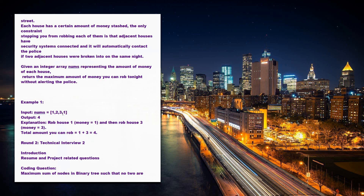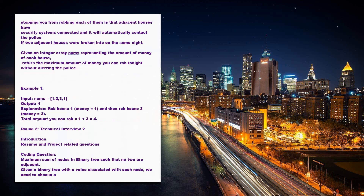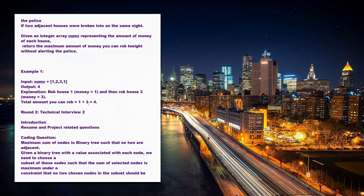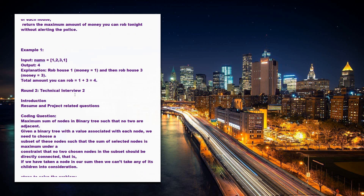For example, with the input array [1, 2, 3, 1], the expected output is 4. You cannot rob adjacent houses, so you choose alternate positions. Starting from position 0, you pick element 1, then skip adjacent and pick element 3 from position 2, totaling 4. You check all such combinations, add the chosen elements, and display the maximum output.